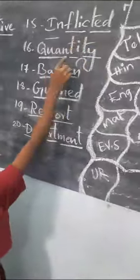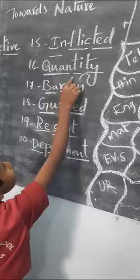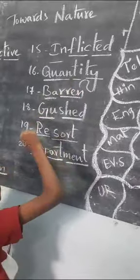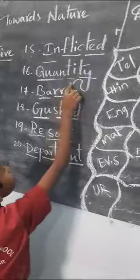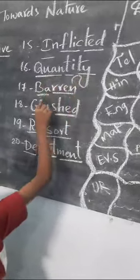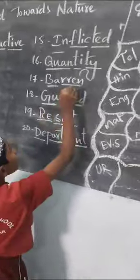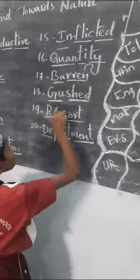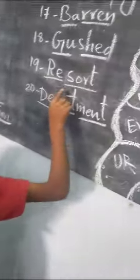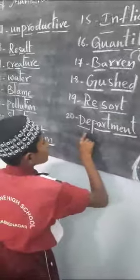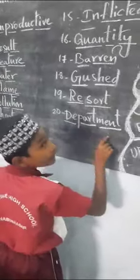Inflected. Quantity. Q-U-A-N-T-I-T-Y. Quantity. Barrel. B-A-R-R-E-L. Gushed. G-U-S-H-E-D. Resort. R-E-S-O-R-T. Department. D-E-P-A-R-T-M-E-N-T. Department. Very good.